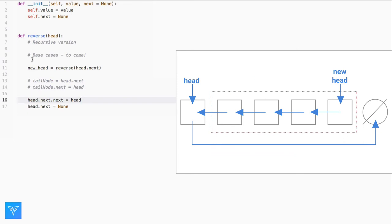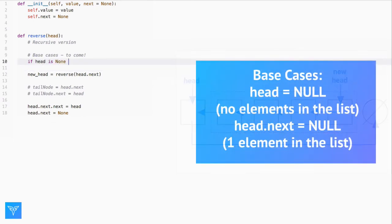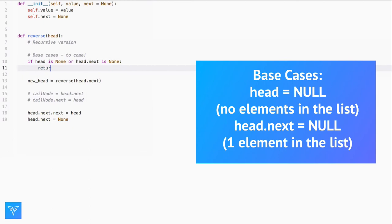Now we have to deal with the base cases. We see that the reversing step requires access to head.next and head.next.next. This is a problem if head is null, that is the list has no elements, or if head.next is null, that is there's only one element. In the case of zero or one elements, the reversed linked list is the same as the original linked list. So we should just return head back again.